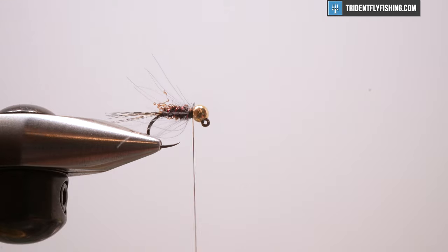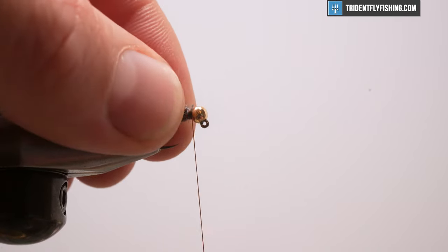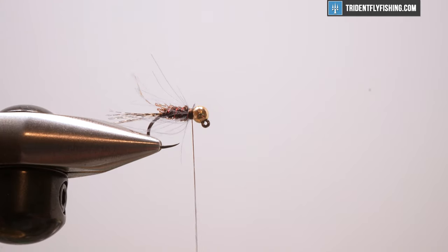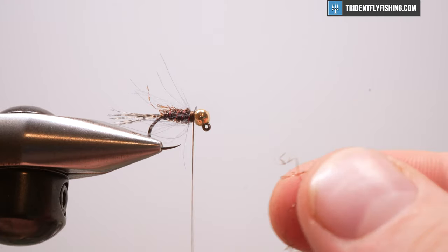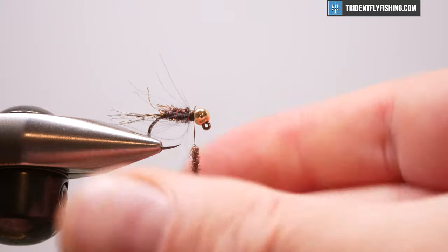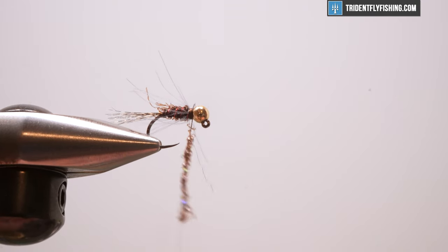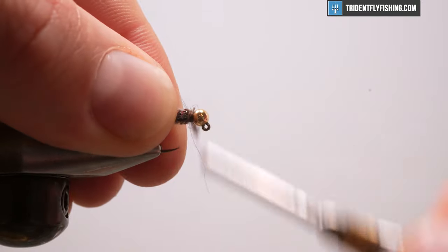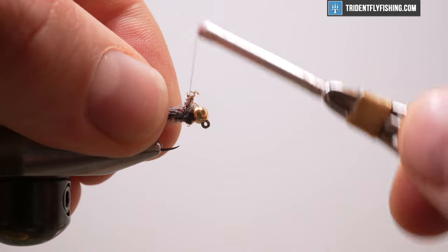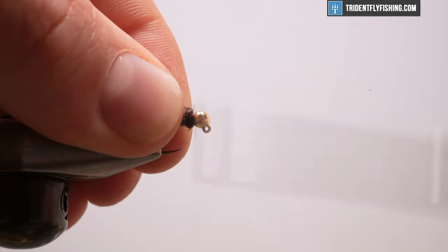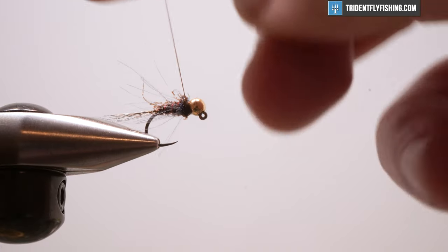Perfect. Well, look what we did. Nice and sparse, looks pretty good to me. Kind of pull that back there, and then we'll grab the remaining chunk of our ice dub here, and we're going to make a nice little thorax with this. So again, you can be as thick or as thin with this as you want. I like to have a good transition, so I want a thicker thorax. But we got to be careful with this stuff, it builds up quick. So let's do that, see how it looks. Pull everything back out of the way, a couple of wraps, and that was perfect. Let's create a little collar with our brown whip finish.